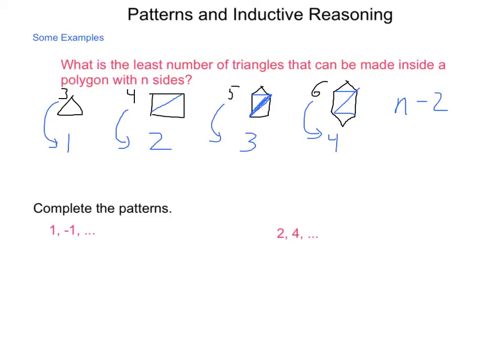So now if I told you I had a hundred-sided polygon, would you be able to make a conjecture about how many, the least number of triangles that can be formed from it? And yes, you go 100 minus two, which gives you 98.